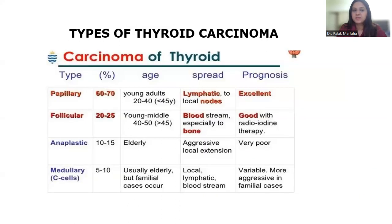Types of Thyroid Carcinoma. There are four types of carcinoma of thyroid. First is papillary — the most common, 60 to 70%, found mostly in young adults around 20 to 40 years of age. It has lymphatic spread to focal nodes and the prognosis is excellent. Second is follicular, which is 20 to 25% common, found in young to middle age group around 40 to 50 years of age, with spread by bloodstream, especially to bones.